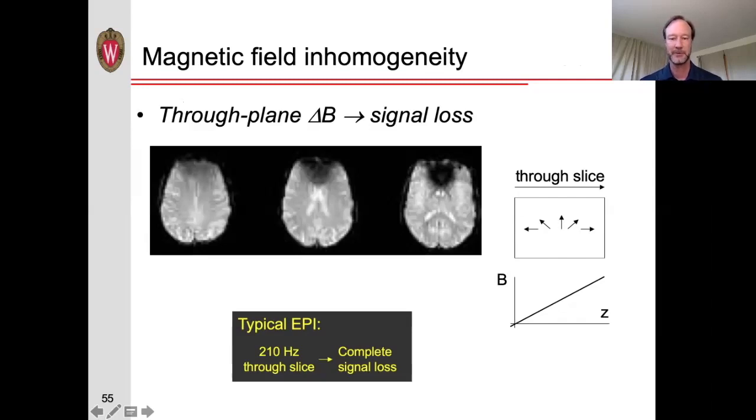So what can we do about this? One very simple solution would just be to make the slice thinner. If we have a thinner slice, there's less phase variation across that slice, and we have less signal loss. Of course, the drawback for that is that we need more slices to cover the entire brain, which leads to longer acquisition times. There are some additional techniques, such as z-shimming, that have been developed, but to my knowledge, they're not very commonly used as of yet.